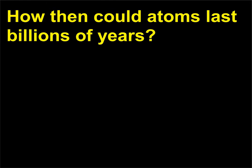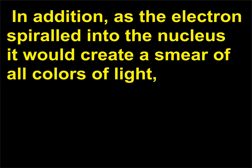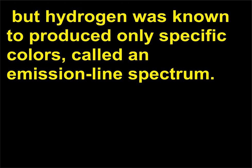How then could atoms last billions of years? Rutherford offered no answer. In addition, as the electron spiraled into the nucleus it would create a smear of all colors of light, but hydrogen was known to produce only specific colors, called an emission line spectrum.